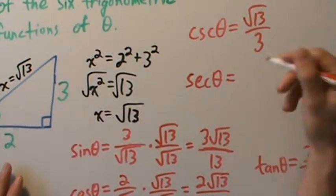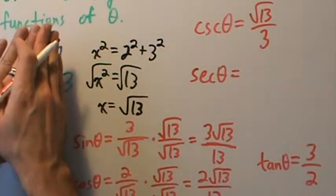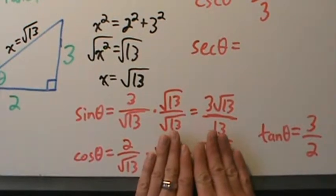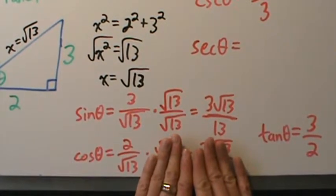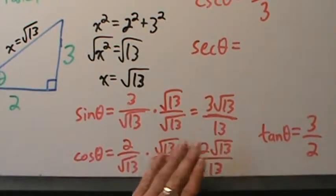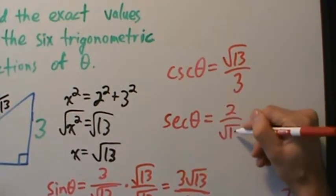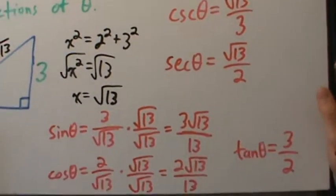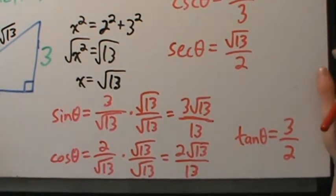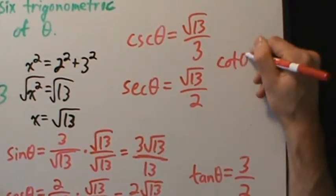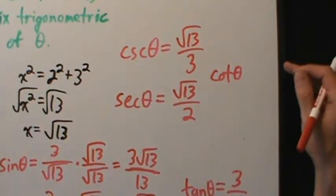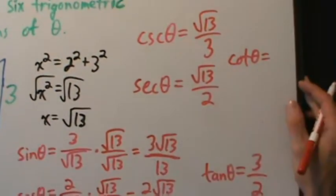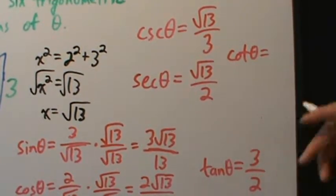For secant of theta, forget about the triangle — secant is the reciprocal of cosine. Cosine of theta is 2 over root 13, so the secant of theta is root 13 over 2. For cotangent of theta, tangent was 3 over 2, so the cotangent is the reciprocal of that, which is just 2 thirds.